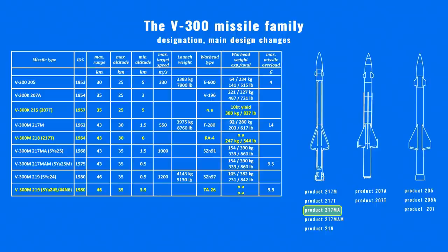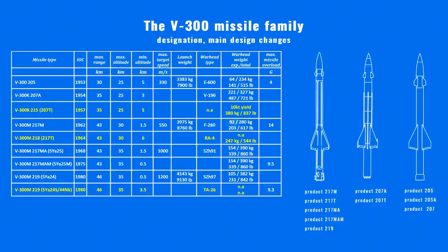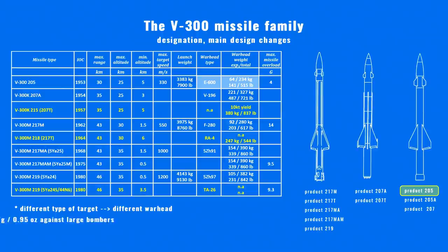The 217MA got a more advanced proximity fuse, which enabled lower minimal engagement altitude in combination with changes to the Yo-Yo radar system. The first 205 type missile was equipped with the E600 type warhead weighing 234 kg, which contained 6,300 fragments each weighing 27 grams. The explosive itself only weighed 64 kg. This was useful against intercontinental bombers. 2,924 missiles of this type were made.